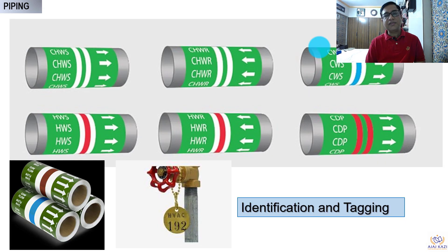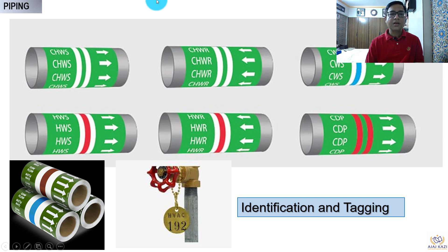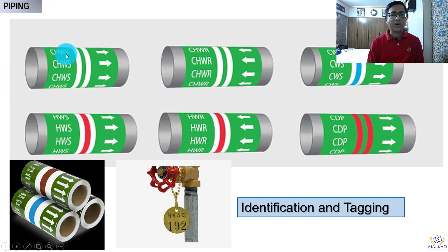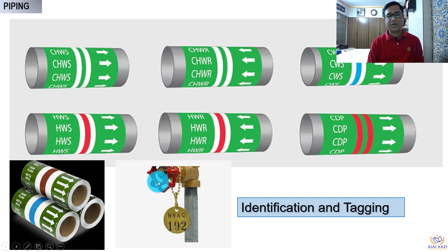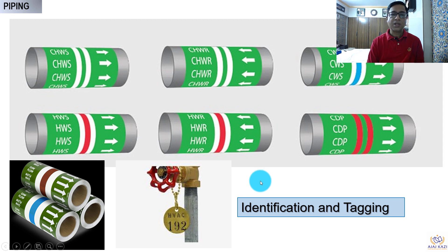Another important thing is identification tagging. When we look at chilled water pipes and condenser water pipes, there are codes specifying what kind of identification to use — color bands and arrows for chilled water supply, hot water systems, and so on. These are available in standards or unit specifications. Similarly, valves are tagged accordingly — for example, HVC 192 — and there will be a table telling you what that tag number refers to. This is properly correlated with the schematics and your identification system.